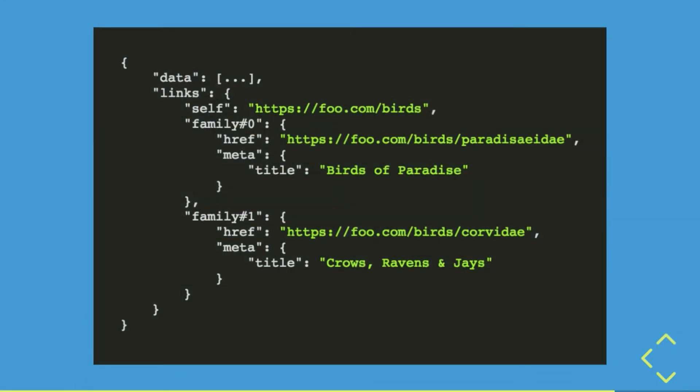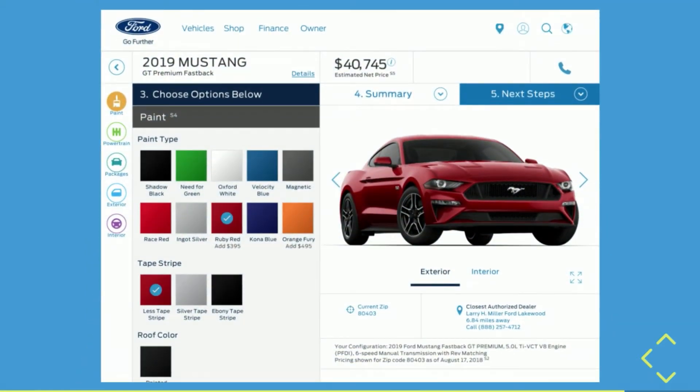Also, contextual links — things that relate. This data might provide a collection of birds, but what if we only wanted birds of a particular family? Birds of paradise, crows, ravens, and jays. We could use links to represent those: if you go to this URL, you'll have just birds of paradise; if you go to this one, just crows, ravens, and jays. You can use that title attribute to give it a pretty name instead of the Latin family name — you might use that in a menu. Menus are another common problem for decoupled sites, and link attributes can solve that.